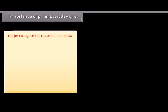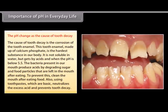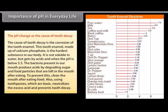The pH change as the cause of tooth decay. The cause of tooth decay is the corrosion of the tooth enamel. This tooth enamel, made up of calcium phosphate, is the hardest substance in our body. It is not soluble in water but gets corroded by acid when the pH is below 5.5. The bacteria present in our mouth produce acids by degrading sugar and food particles that are left in the mouth after eating. To prevent this, clean the mouth after eating food. Also using toothpastes, which are basic, neutralizes the excess acid and prevents tooth decay.